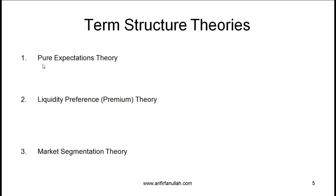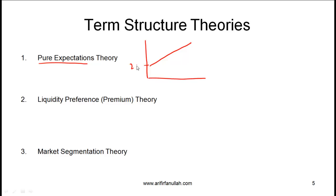The most basic theory is called the pure expectations theory. This theory simply says that the yield curve shape is based on expectations about future interest rates. For example, an upward sloping yield curve can be explained by saying that if you expect interest rates to rise in the future, the yield on longer-term securities will be high. This is called pure expectations because the shape of the yield curve is purely based on expectations about future interest rates.